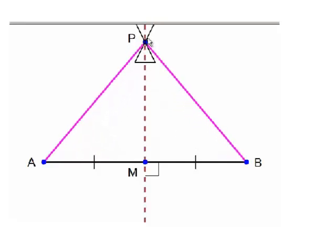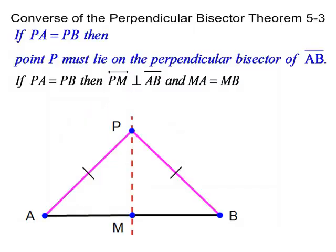The converse of the perpendicular bisector theorem just says that if PA is congruent to PB, then P must be lying on the perpendicular bisector of AB.